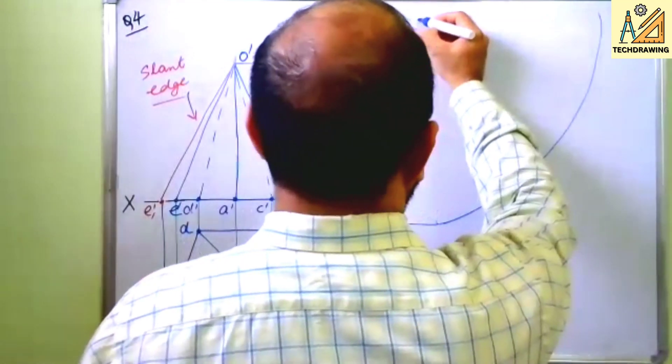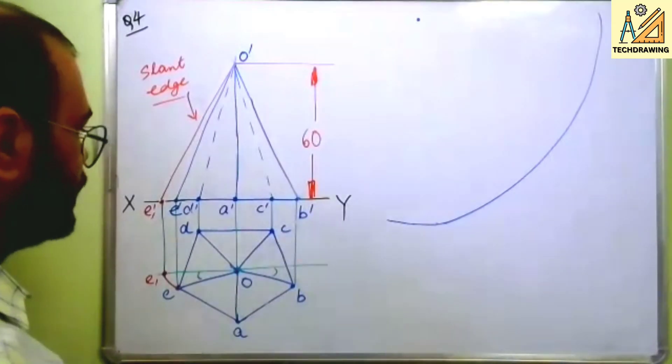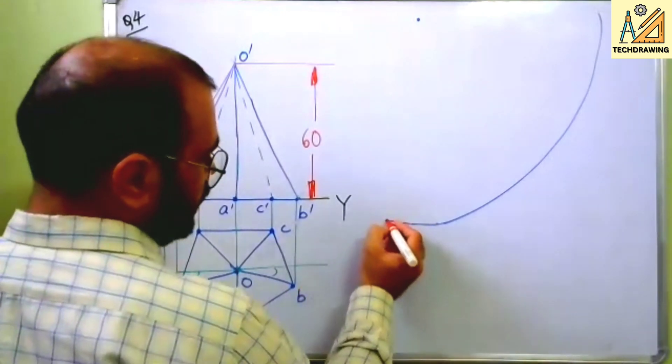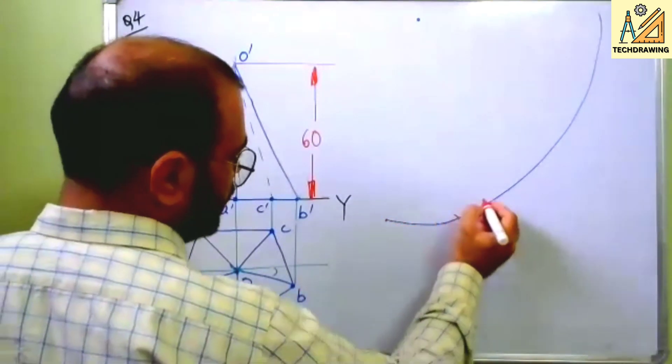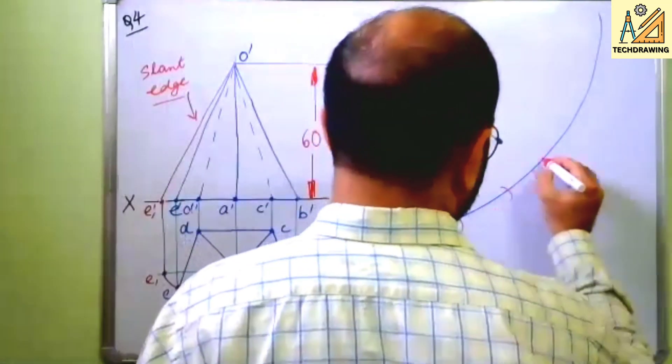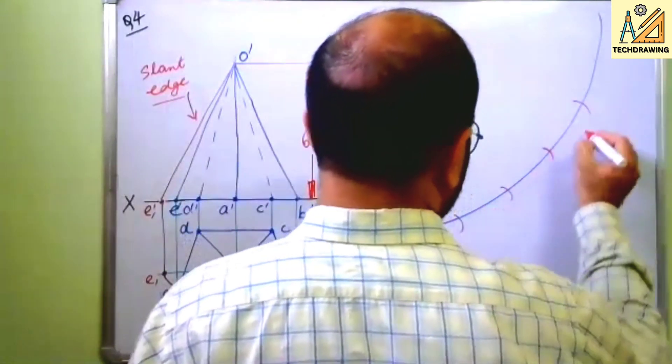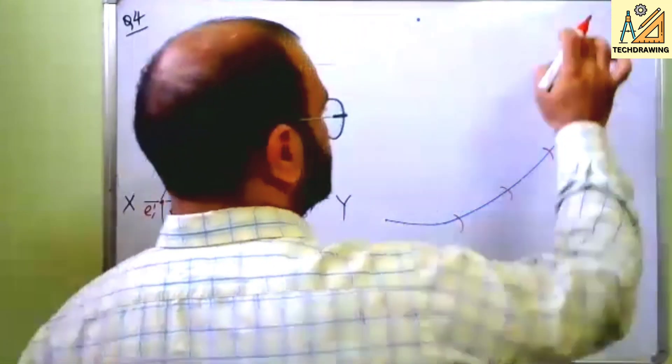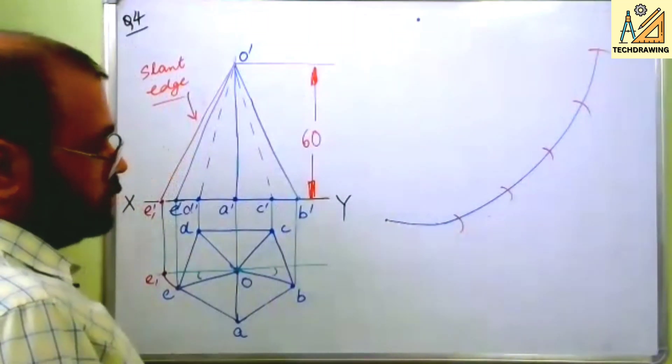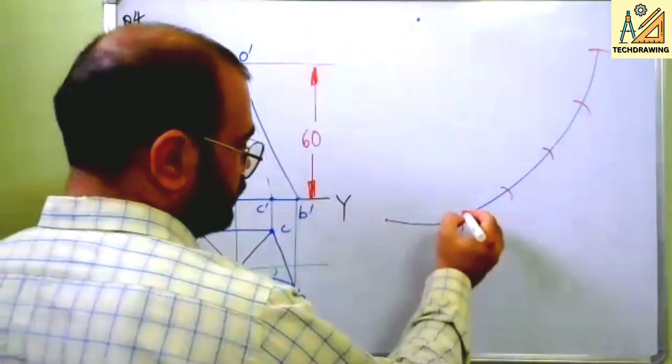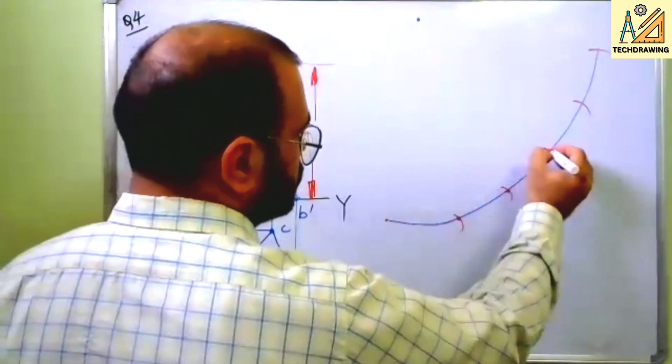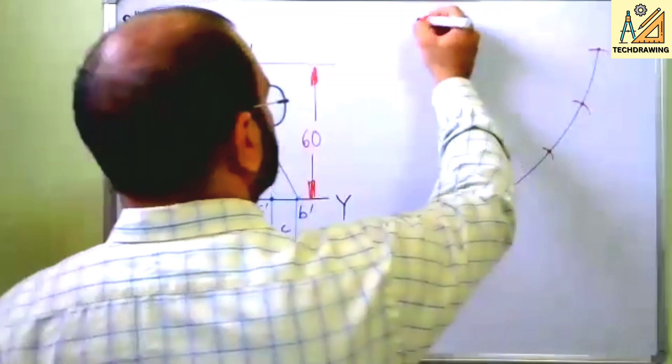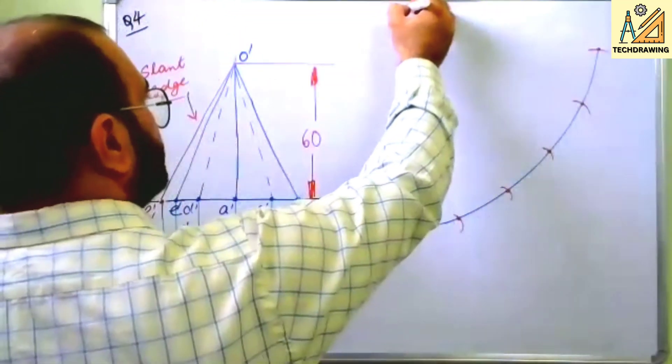Let us say this is the center of the arc. Open your compass equal to 25, keep it here mark an arc, keep it here mark an arc. Like this you will get this. You can join all these points.